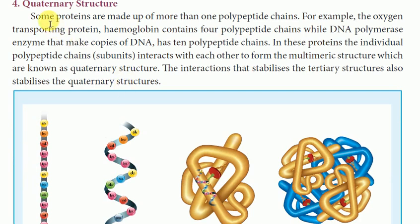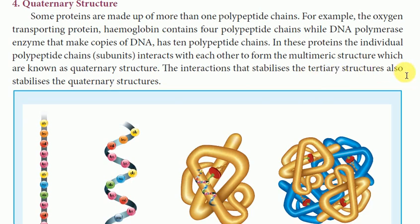Some important proteins are made up of more than one polypeptide chain. For example, the oxygen-transporting protein hemoglobin contains four polypeptide chains, while the DNA polymerase enzyme that makes copies of DNA has ten polypeptide chains. In these proteins, the individual polypeptide chain subunits interact with each other to form a multimeric structure known as the quaternary structure. The interactions that stabilize tertiary structure also stabilize the quaternary structure.